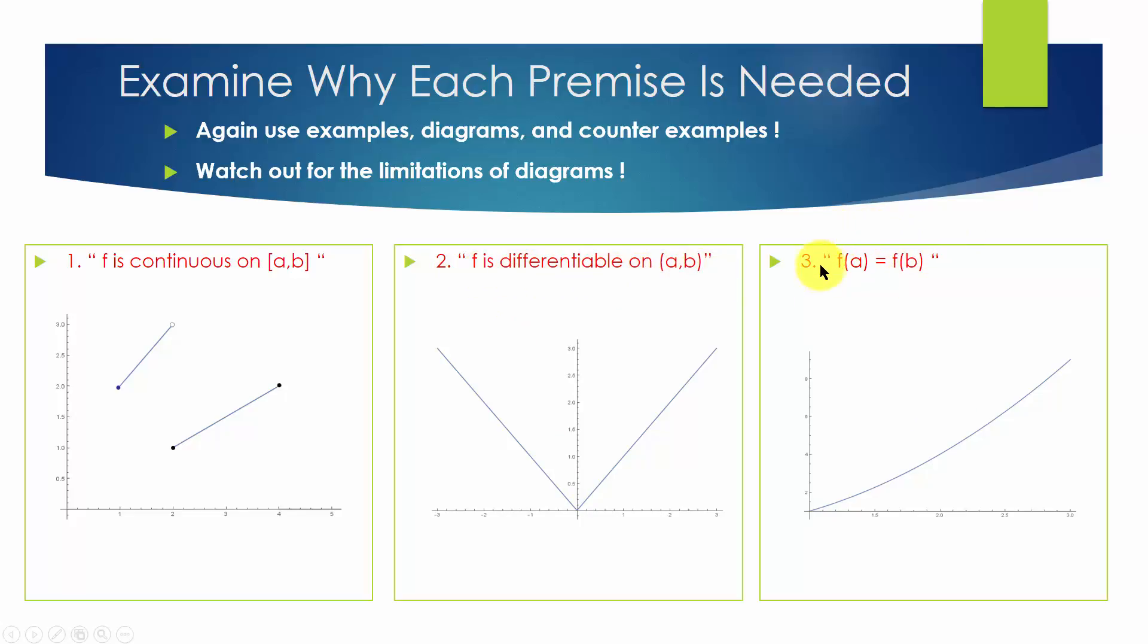The third premise is that f(a) equals f(b). This diagram shows a function f which is continuous on closed interval [a, b] and differentiable on open interval (a, b). But f(a) does not equal f(b).